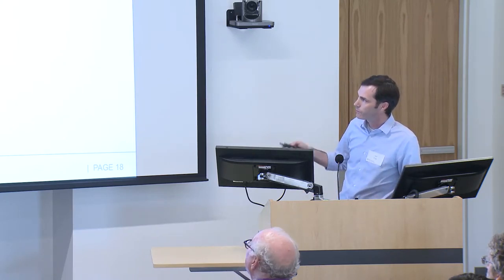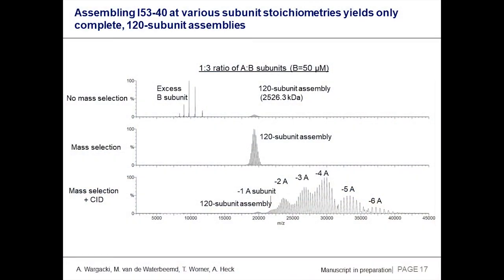For multivalent antigen display, the approach we favor is genetic fusion of your antigen to a nanoparticle subunit — seamless integration, and you know exactly how many copies there are, with no conjugation uncertainty about how much antigen is present. We've been doing a lot of work with viral glycoprotein antigens, which are often trimeric, so we match the symmetry of the nanoparticle subunit to that of the antigen. This is an advantage of being able to design these things — you can tailor it to display a specific antigen.